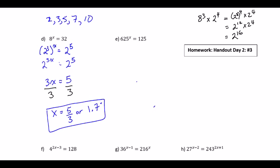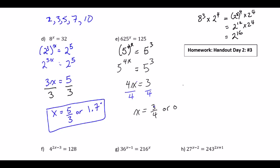For the next problem, we have 625 to the x is equal to 125. The big hint is the number 5, so we're going to use 5 as our base. We replace 625 with 5 to the 4, all raised to the x, and 125 is just 5 cubed. Using power of a power, we multiply to get 5 to the 4x is equal to 5 cubed. We drop the base to get 4x is equal to 3, then divide both sides by 4, ending up with x is equal to 3 over 4, otherwise known as 0.75.